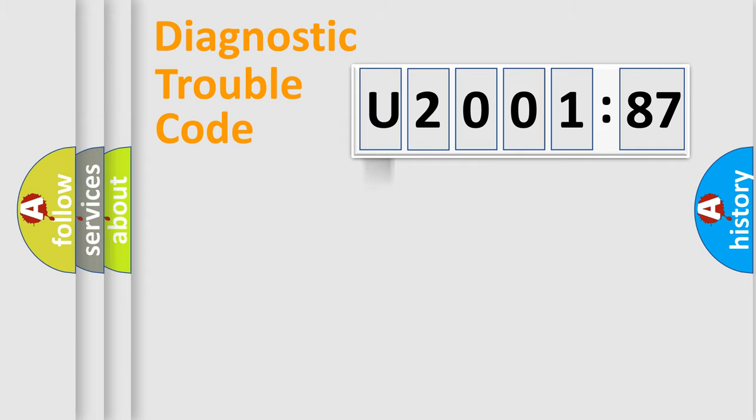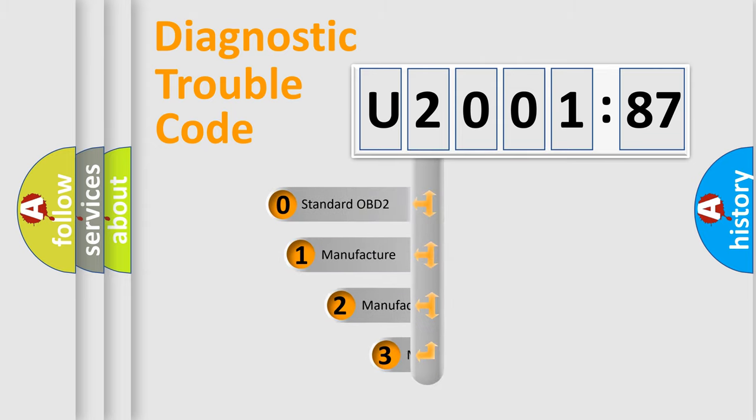Powertrain, Body, Chassis, Network. This distribution is defined in the first character code.